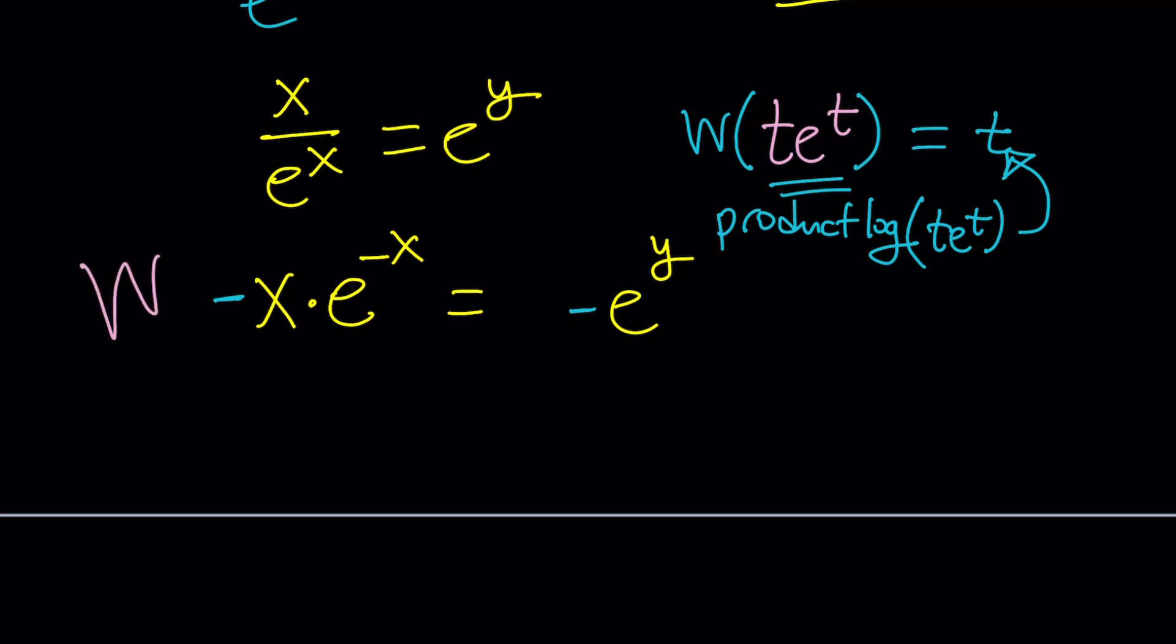If you Lambert both sides with Lambert's W function, then on the left-hand side, you have t·e^t, which is this, by the way. So, you're going to get -x out of that. And that'll equal the Lambert's W function of this or just W(-e^y). So far, so good.